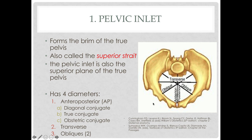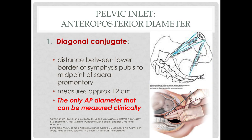The pelvic inlet has four diameters: the AP diameter, the transverse diameter, and two oblique diameters. Under the AP diameter, we have three conjugates: the diagonal conjugate, the obstetrical conjugate, and the true or anatomic conjugate. The conjugate or AP diameter runs from the symphysis pubis up to the sacral promontory.